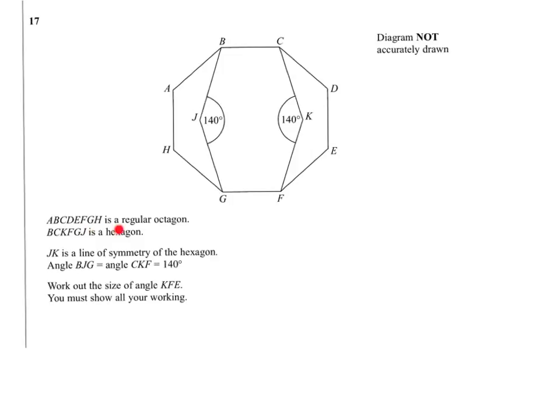ABCDEFGH is a regular octagon. BCKFGJ is a hexagon. JK is a line of symmetry of the hexagon. Angle BJG equals angle CKF, these two both equal 140. We've got to work out the size of angle KFE, so I'm going to mark in a little X to show you the angle we're trying to find.